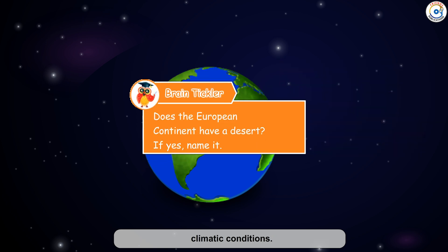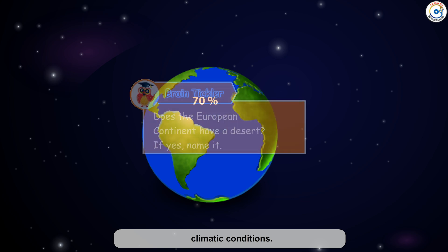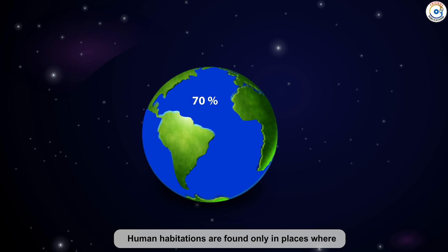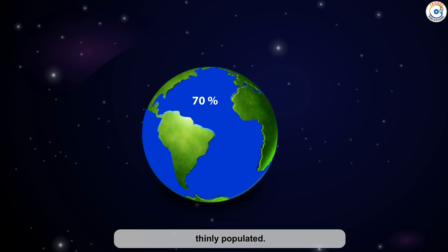Brain Tickler: Does the European continent have a desert? If yes, name it. Human habitations are found only in places where water is available, and hence these regions are very thinly populated.